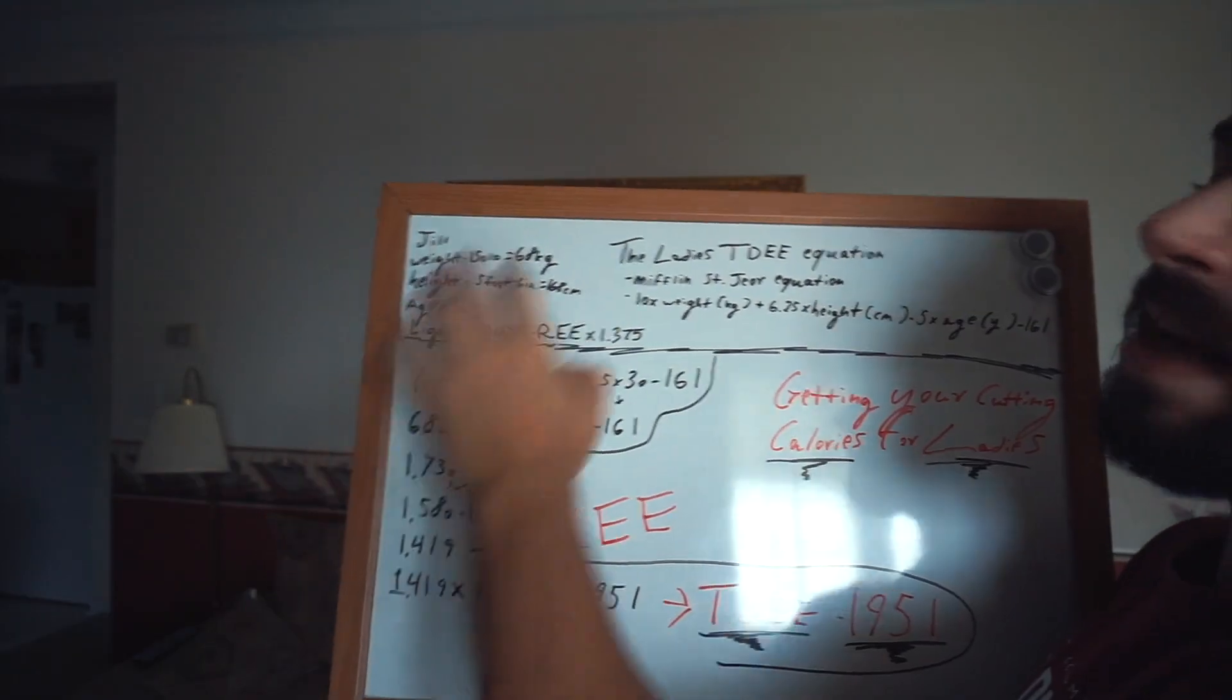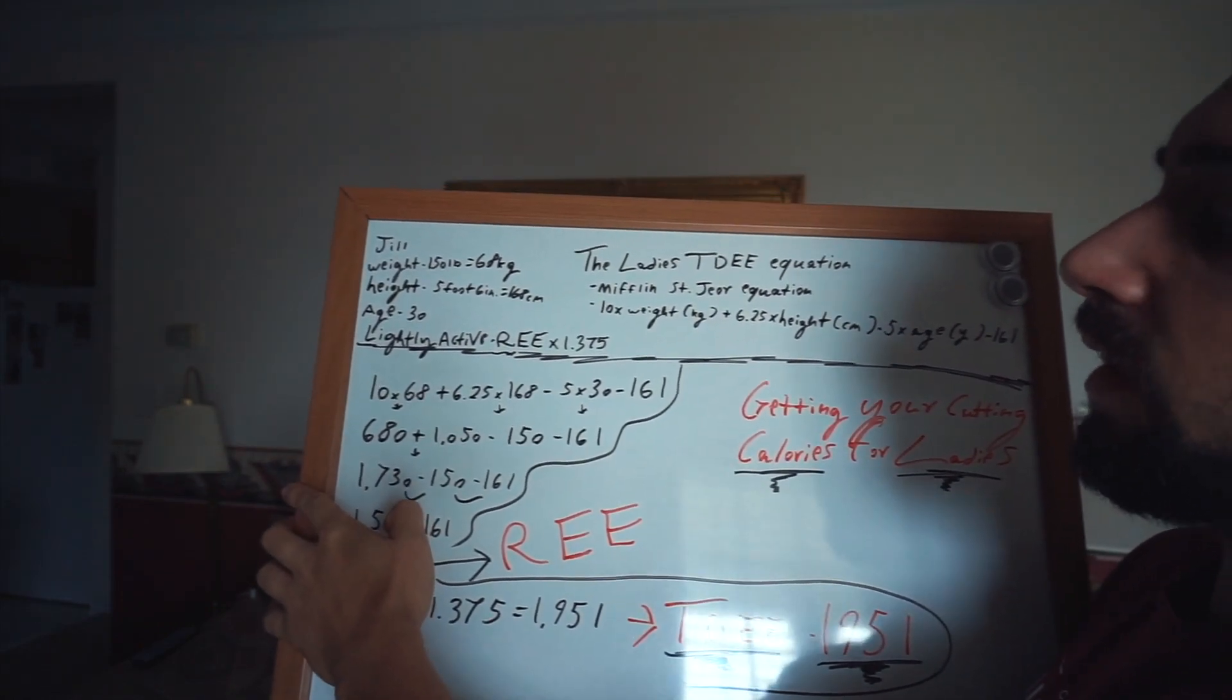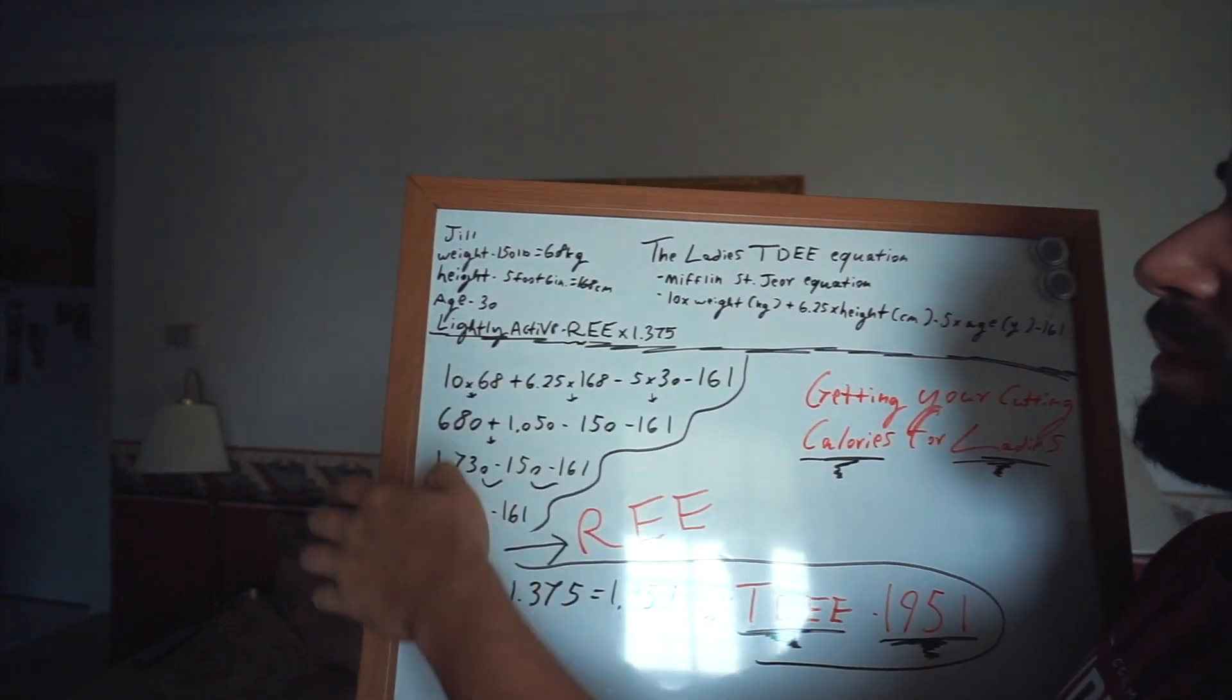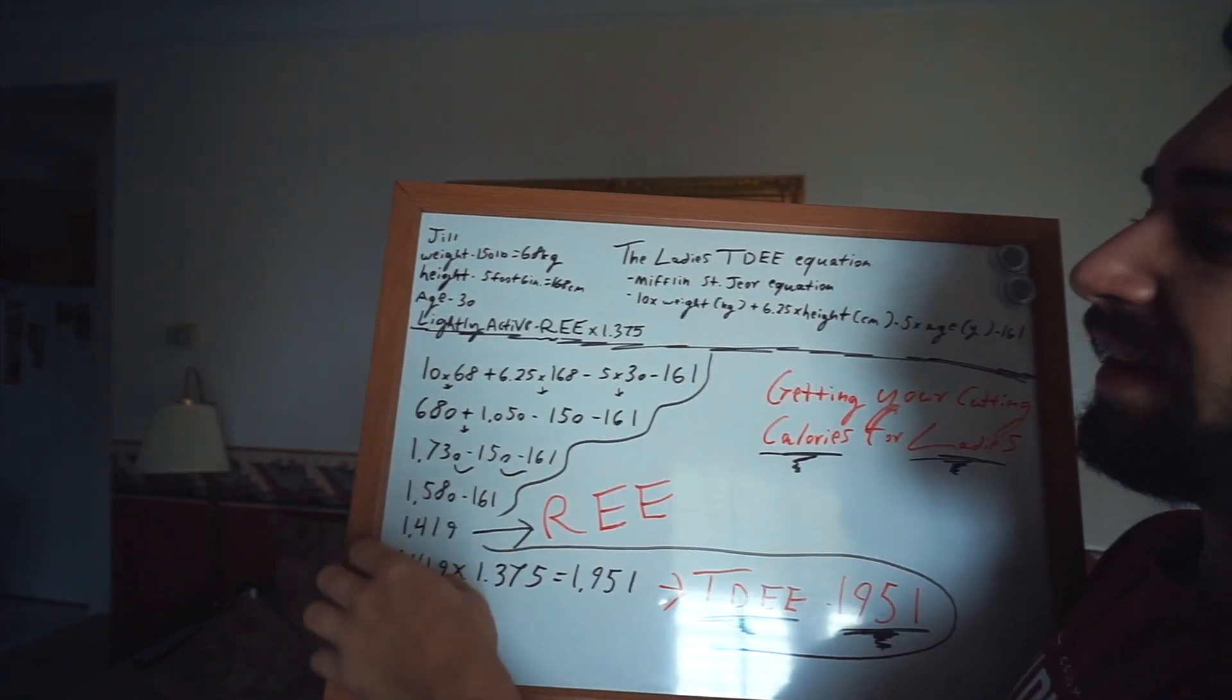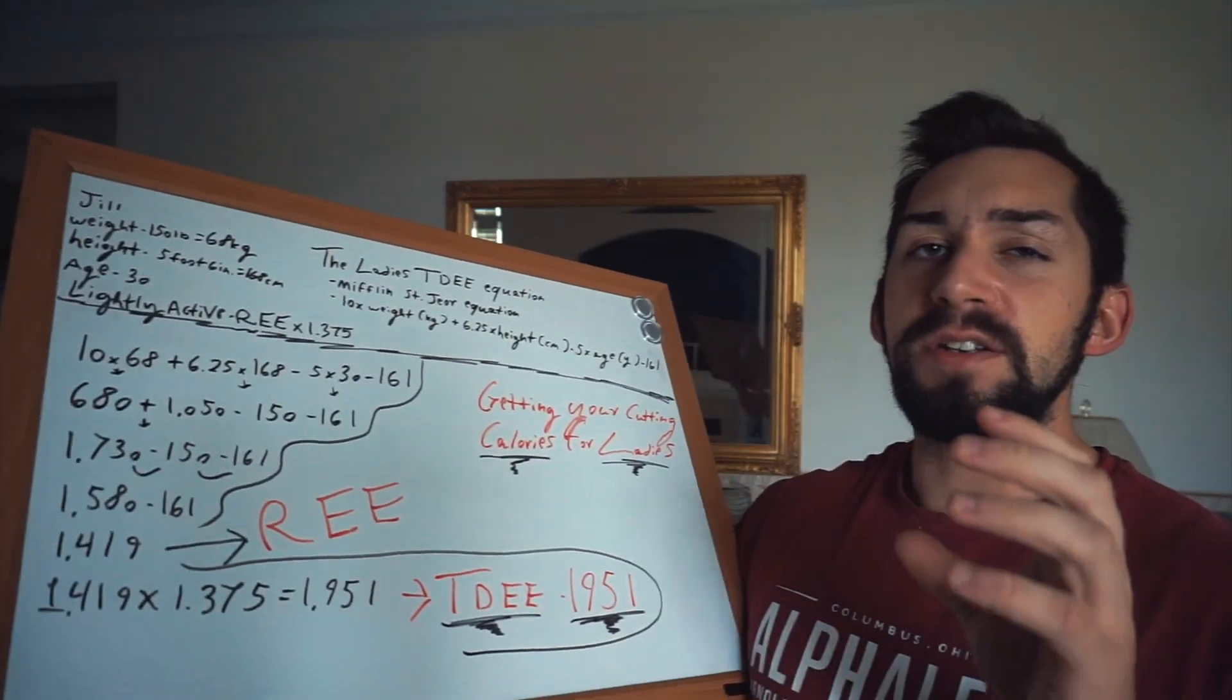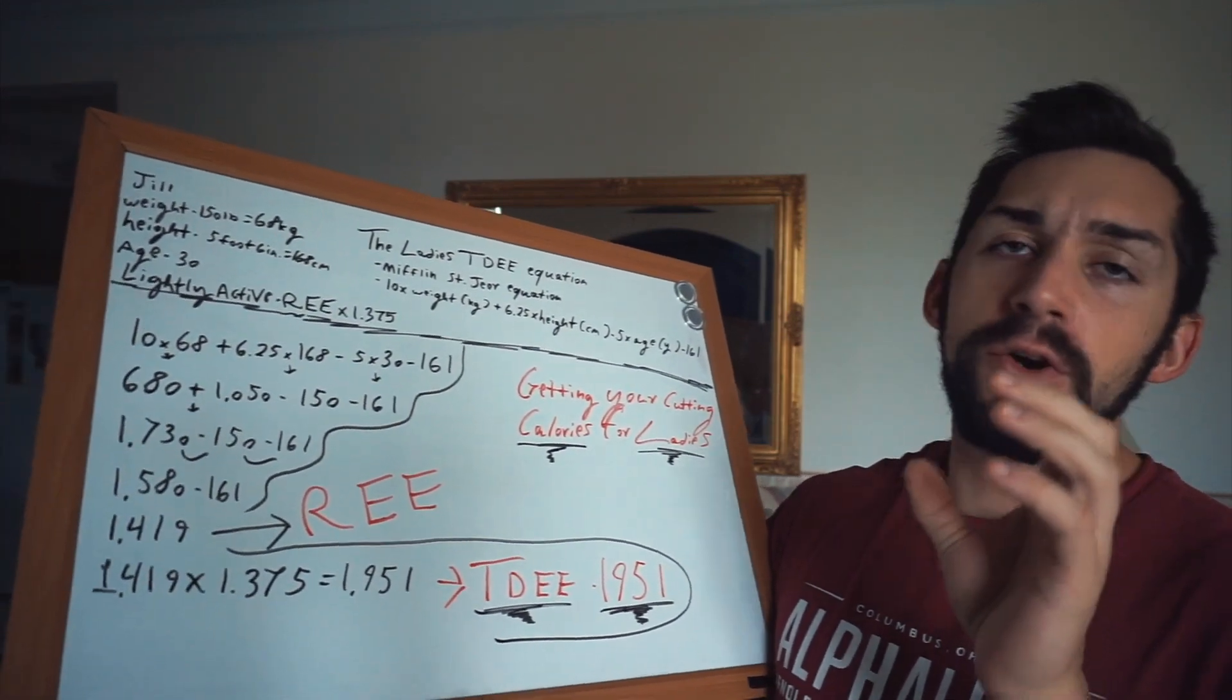Last time I used myself as an example. This time we've got Jill. Jill is 150 pounds which is 68 kilograms. She is five foot six inches, which is 168 centimeters. She is 30 years old and she is lightly active. So really quickly in 60 seconds or less I'm going to do the equation and show you how to get your TDEE for the ladies.